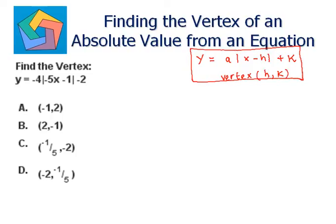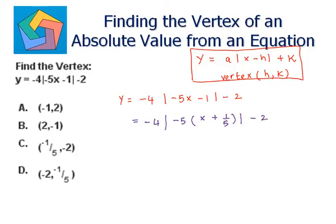We have our equation as y equals minus 4 times absolute of minus 5x minus 1, minus 2. Let's take minus 5 common inside the absolute. That gives us minus 4 times absolute of minus 5 times the quantity x plus 1 over 5, minus 2. We can separate the absolute values: absolute of minus 5 times absolute of x plus 1 over 5, minus 2.